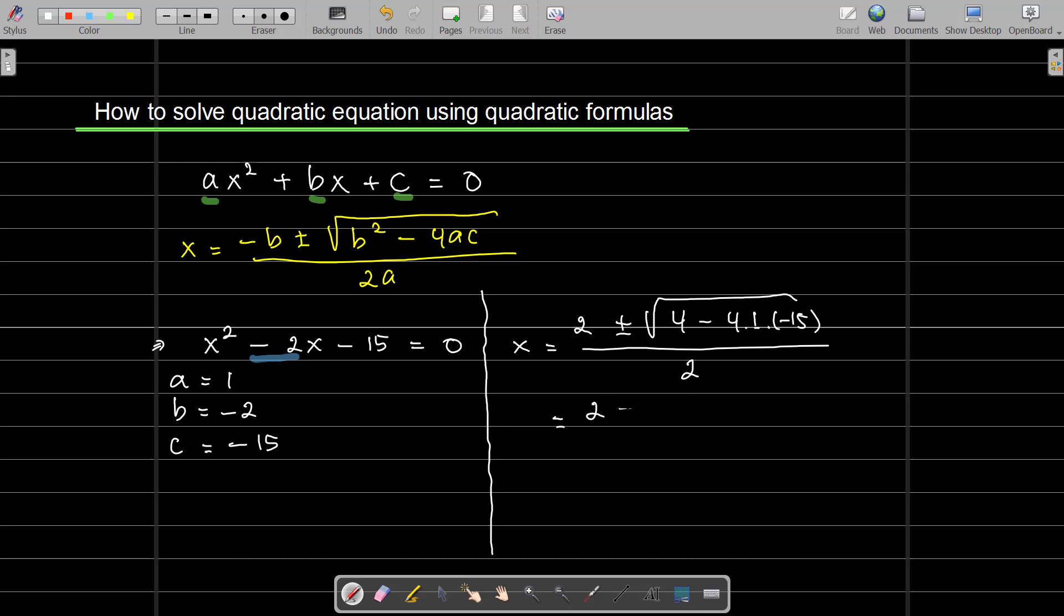2 plus or minus square root of 4. I can say that 4 times 1 is 4, and times -15 is -16. Minus -16, so plus 16, divided by 2. Equal to 2 ± √(4 + 16) = 2 ± √64, divided by 2.